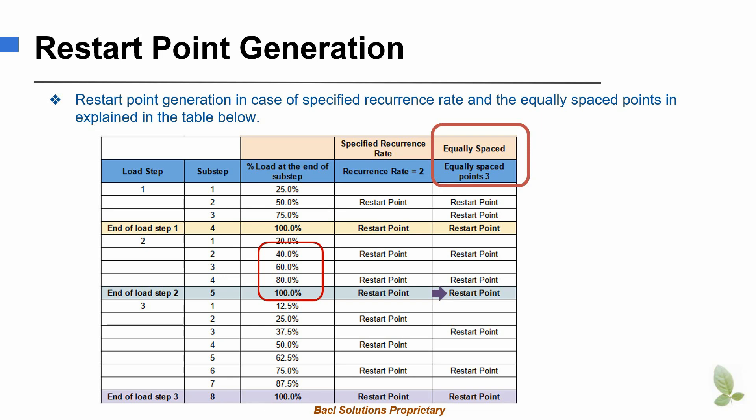Note that restart point 1 and 2 are separated by the equal spacing of 40% of the load. Although the spacing between the third restart point and the second restart point is only 20% of the load, a restart point is written for sub-step 5. This is because it is the last sub-step of load step 2. Thus, regardless of the spacing, a restart point will always be written at the last sub-step of the load step.